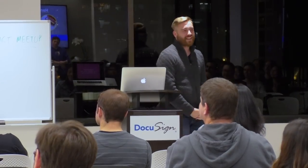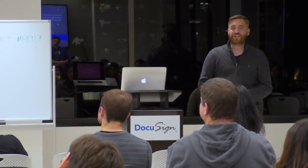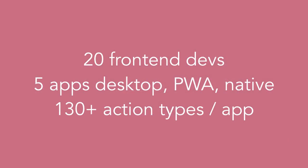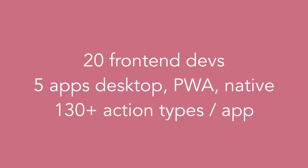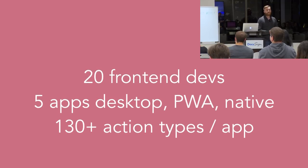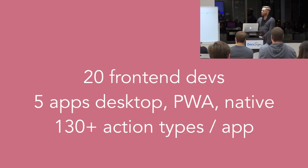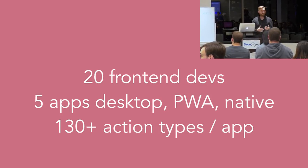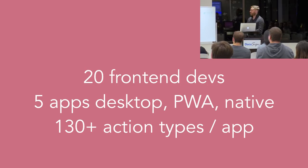When I talk about scale, it's a vocabulary more associated with back-end development. Here I'm talking about the scale of the development team — how do you manage 20 front-end developers all working on Redux. I'm talking about five apps in different form factors: desktop, PWA — mostly mobile with offline mode — and also native. The last dimension is the number of actions and action types we need to support, which roughly equals the number of features in our application.